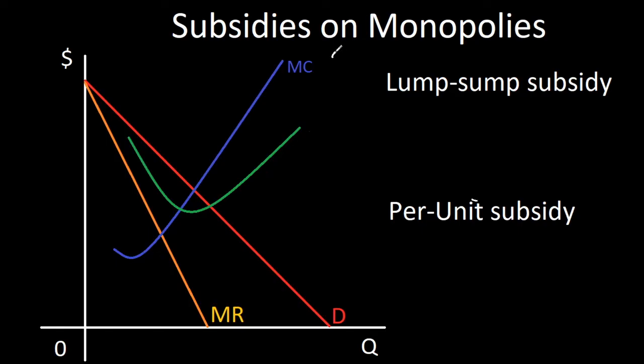MC is simply change in total cost over change in quantity. Notice that it's not total cost itself, but the change in it. In other words, the derivative of total cost. This means that even if total cost is shifted downwards or upwards, your MC will still remain the same.